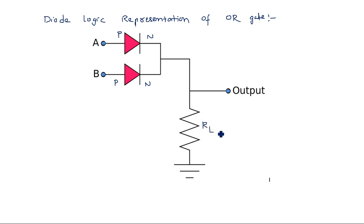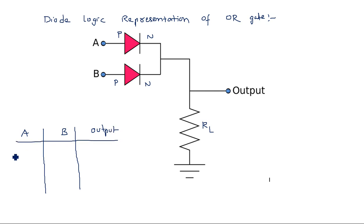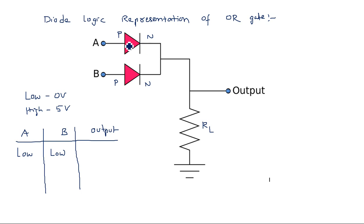The resistor connected here is a load resistor. Let us consider the truth table for inputs A and B. Low is 0 volts and high is 5 volts. When both A and B are low (zero volts), the diodes are in the off state because a diode needs a cut-in voltage of 0.7 V (silicon) or 0.3 V to switch on. The voltage difference from P to N must be 0.3 or 0.6 volts for the diode to turn on.